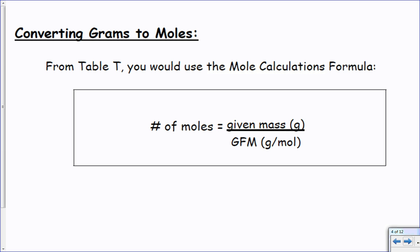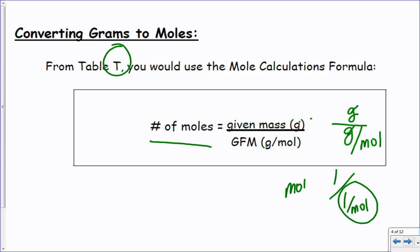Table T, back page of your reference tables, tells me the number of moles is the mass divided by the grams over moles. Here it is right here, mass over mass over moles. If I have grams divided by grams over moles, the grams cancels and that leaves me with one over one over a mole. If I have a fraction in denominator, math says I can flip it and bring it to the numerator, so that just becomes moles. That's how I get from grams to moles.